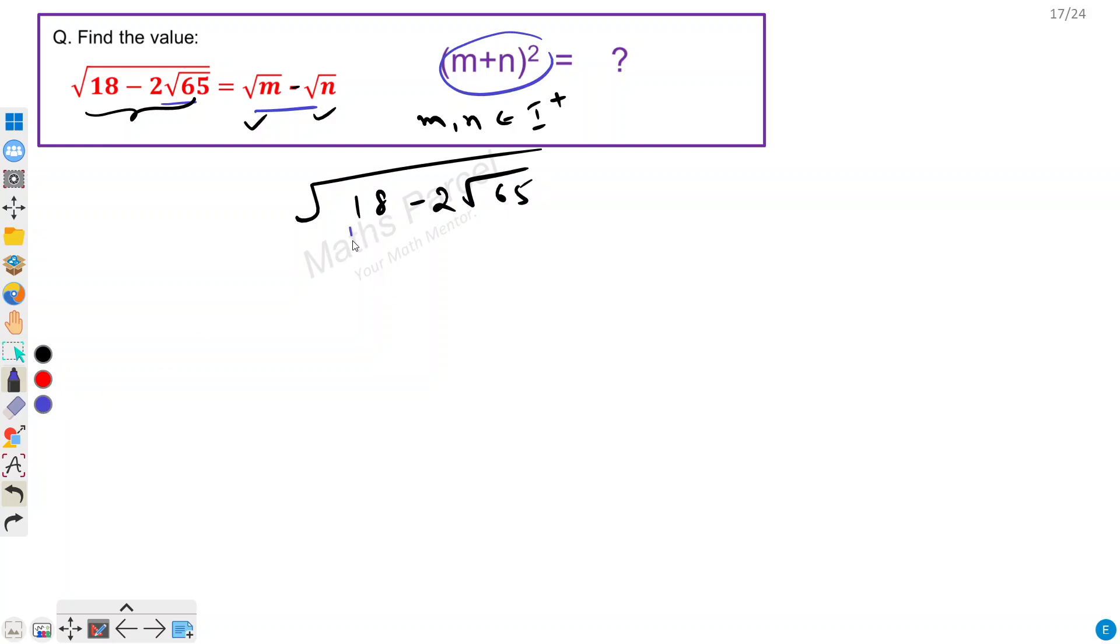Now most of the times you will find that the expression inside is a perfect square. If it is not, then we will multiply or divide by some number. So our primary objective is to make it a perfect square. So we have 18 minus 2 root 65.